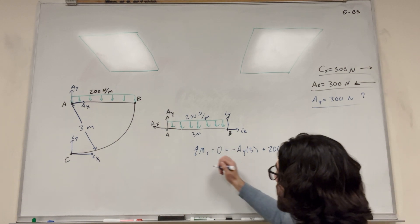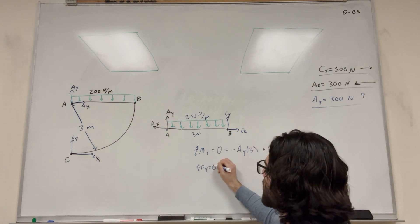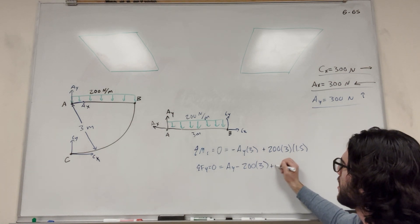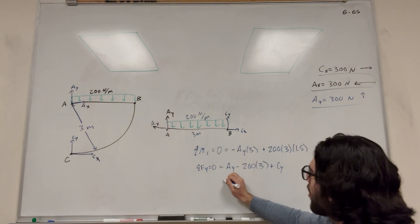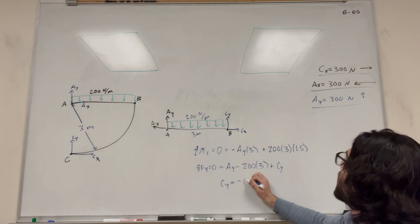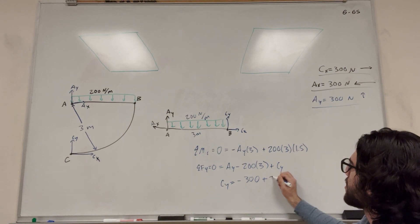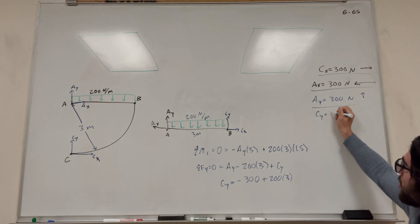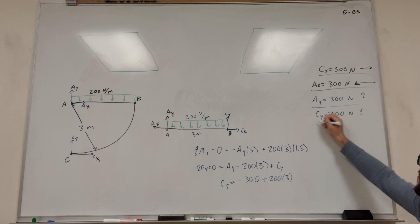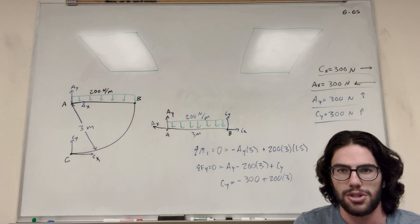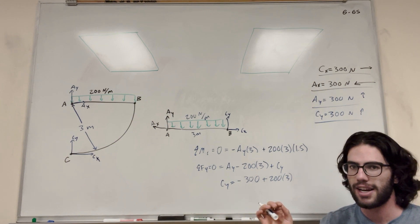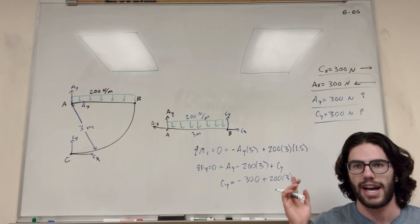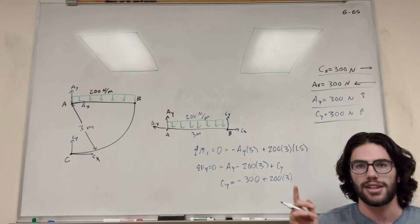All we have left is the sum of forces in the Y direction, equal to zero. We have Ay, minus the 200 newton-meter force over three meters, plus Cy. Move Cy over: Cy equals negative Ay plus 200 times 3. Since Ay is 300, Cy is also equal to 300 newtons upward. So that's how we figured it out — it's not too tricky, just about knowing where to take the right moments. If you have any questions, check out my channel — I have a whole statics playlist. See you in the next one!